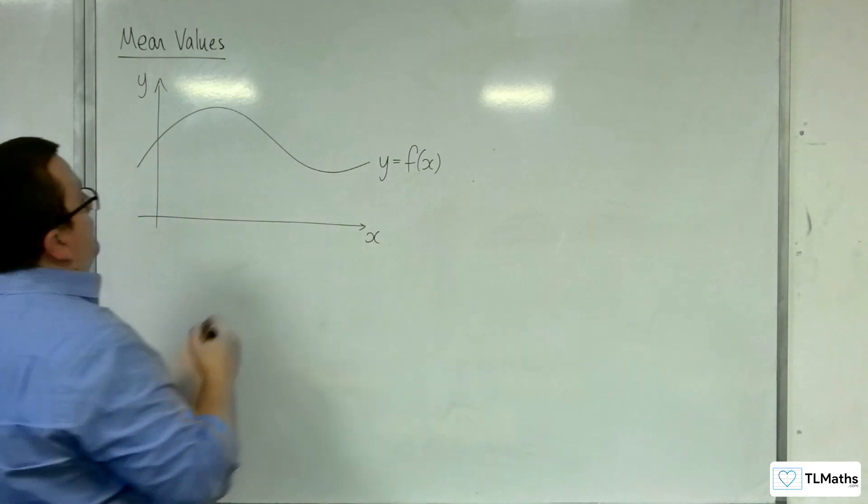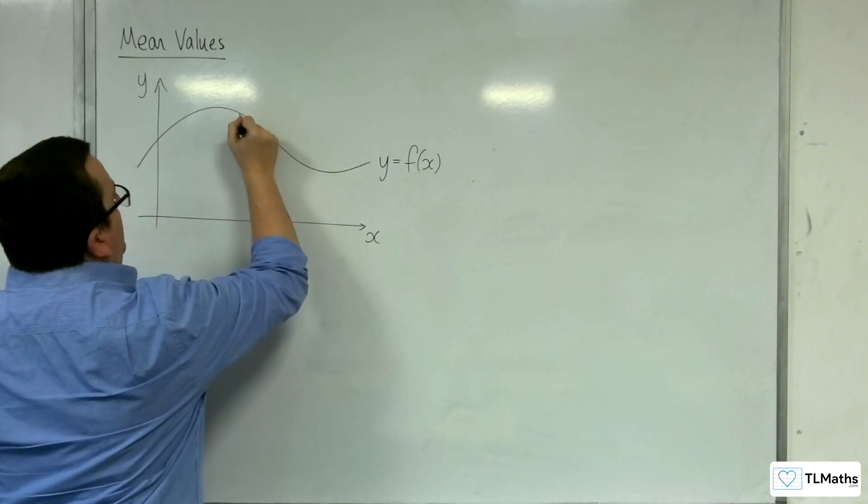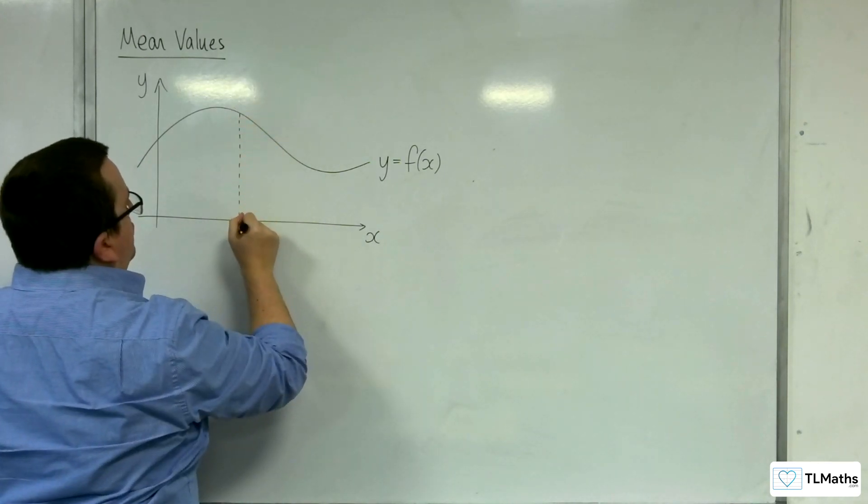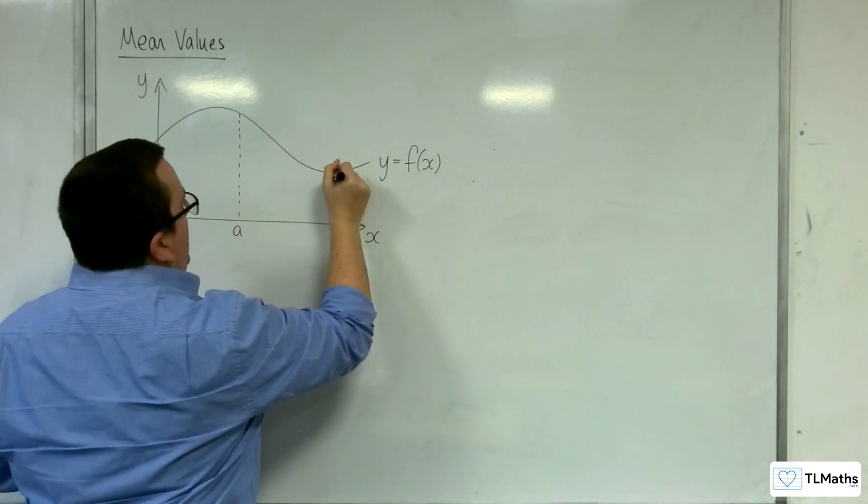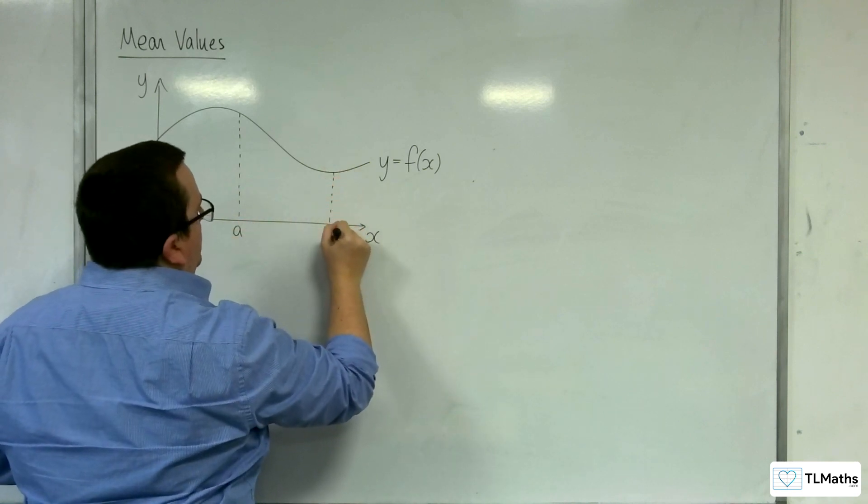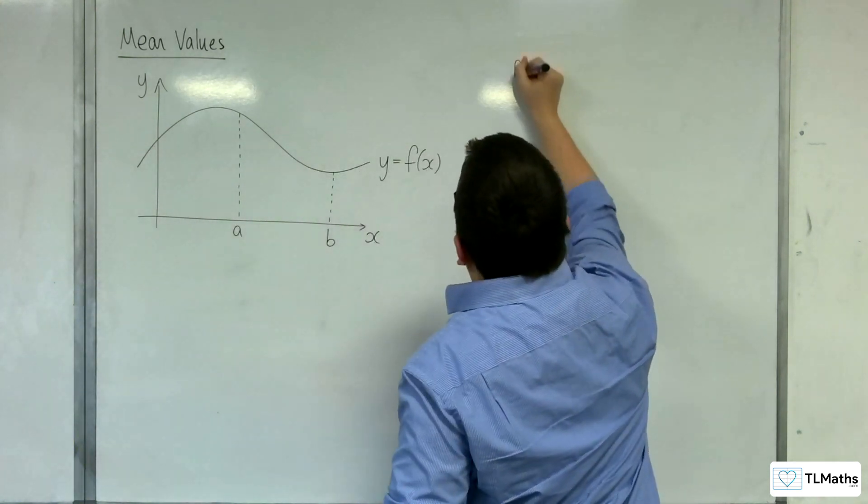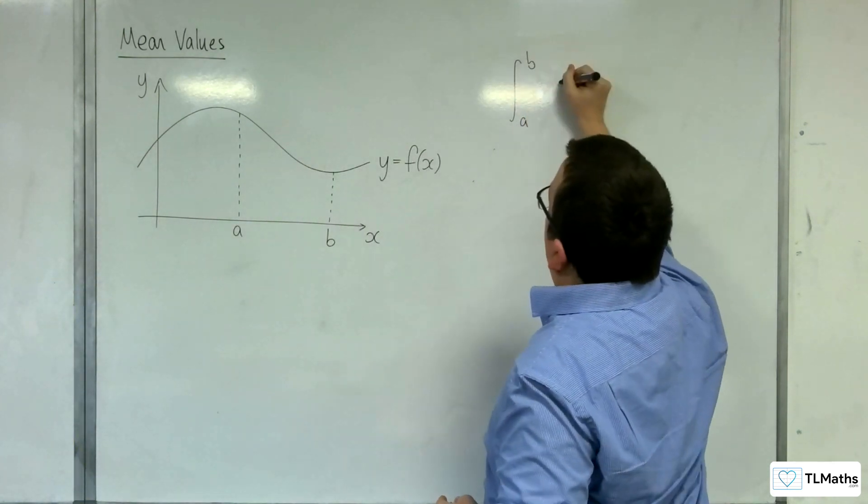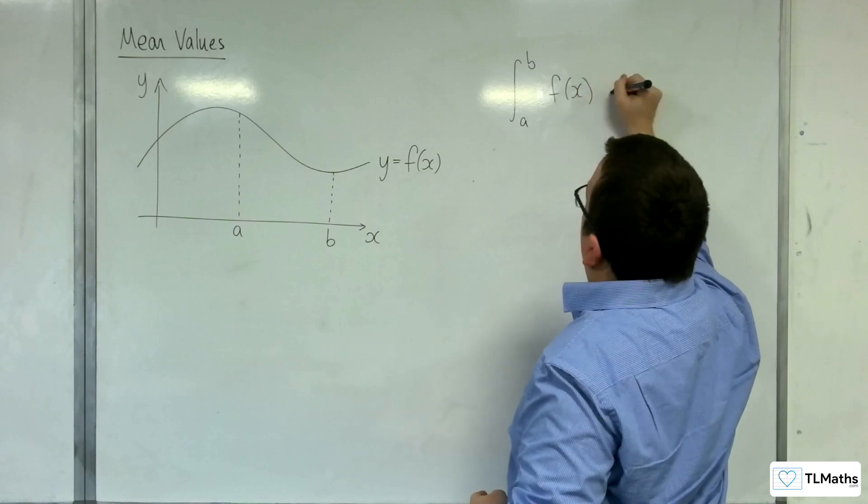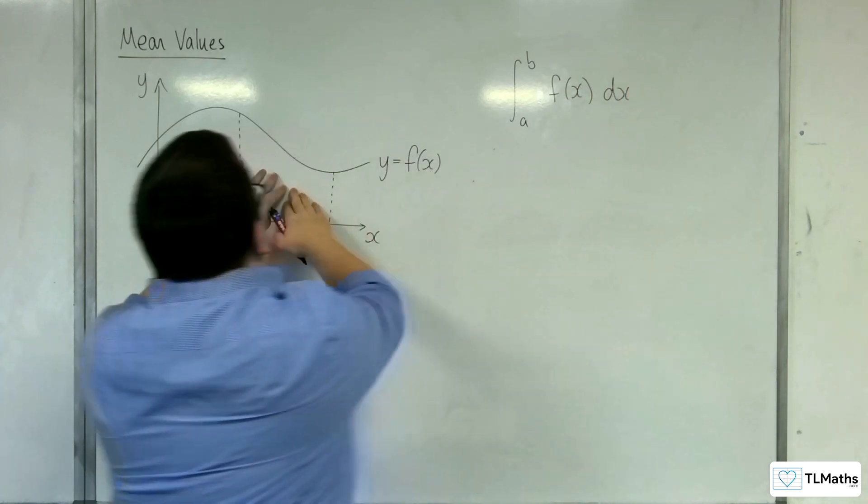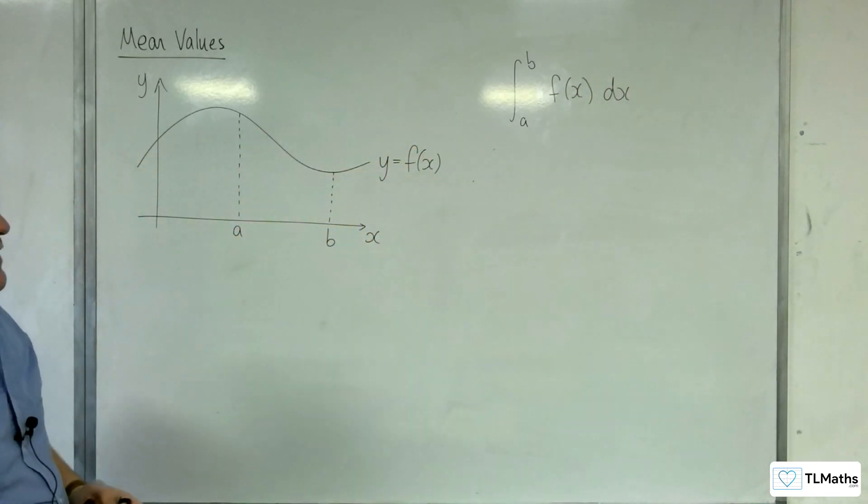So the idea is that if I look at the area between a and b for this curve, which we know would be the integral between a and b of f of x dx. So we know that that area would be that integral.